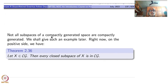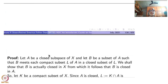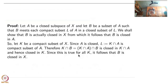Right now on the positive side we have the following. Take X in CG. Every closed subspace is compactly generated. That is, it is weakly hereditary — in one sense only, weakly hereditary, not open. The proof is not very difficult.